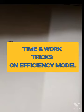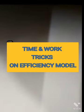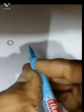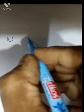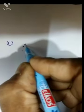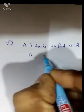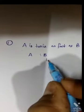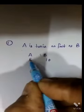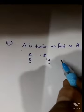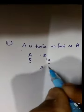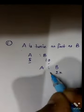Today I will tell you how to do sums based on efficiency in the time and work section. A is twice as fast as B — suppose B can do a work in 10 days, then A can do the same work in 5 days because A is two times faster than B. So A is to B ratio is 1 is to 2, not 2 is to 1.